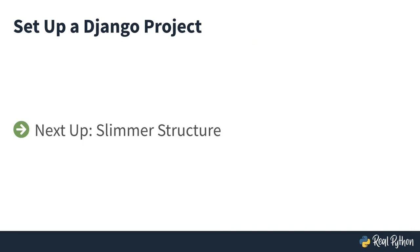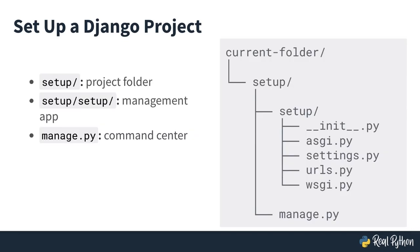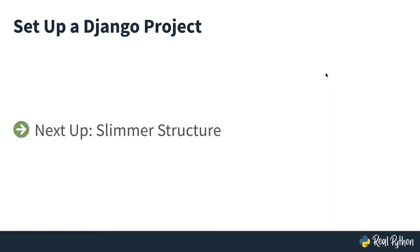You might wonder why you have this double nesting — `setup` and then another `setup` inside. There are ways of skipping one level of these directories by declaring the current folder you're in as your Django project folder, and in the next lesson I will show you how to do that.